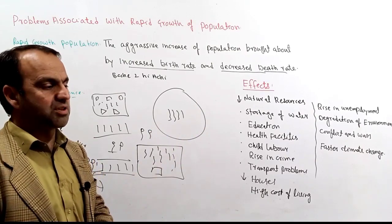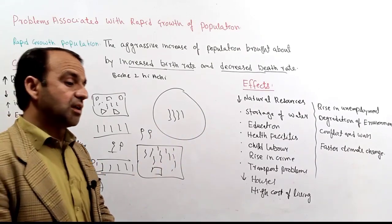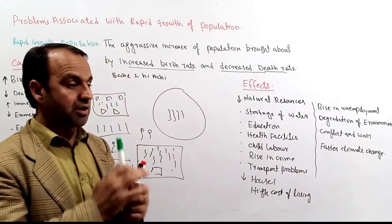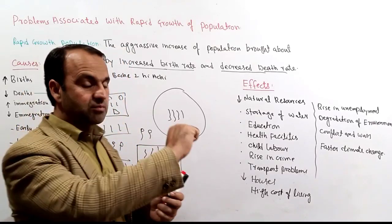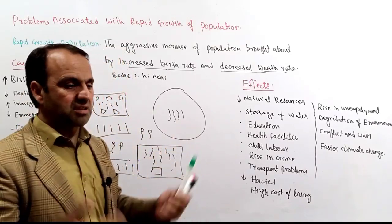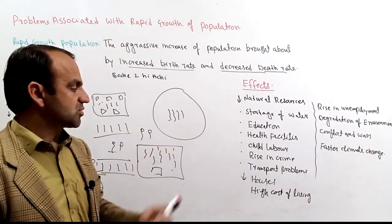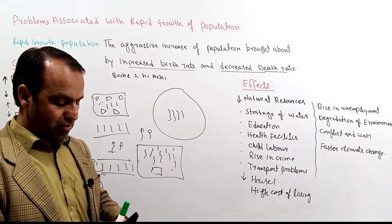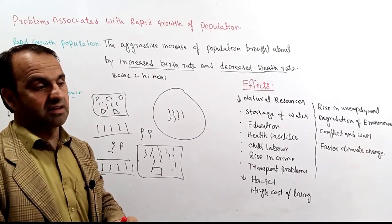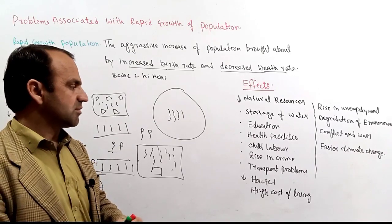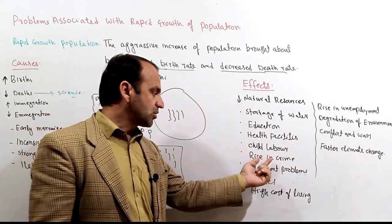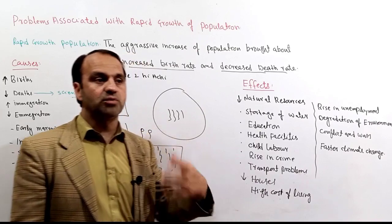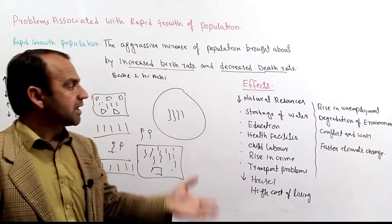Rapid population growth also contributes to an increase in crime. People who are unable to find employment or meet their basic needs may turn to crime. This is another significant problem associated with the rapid growth of population.